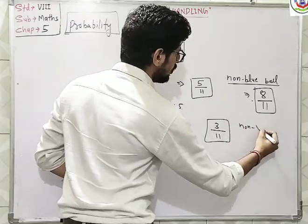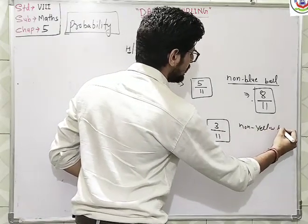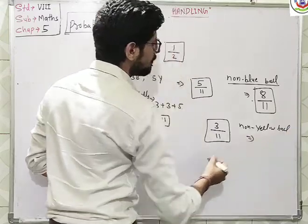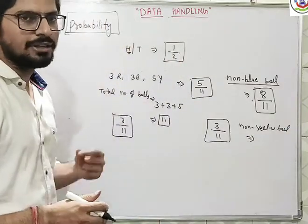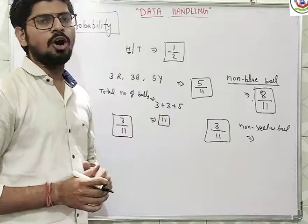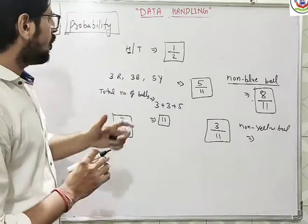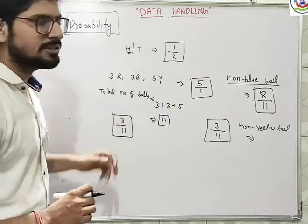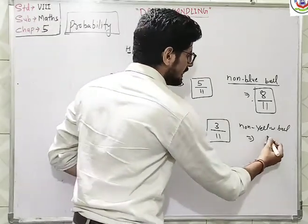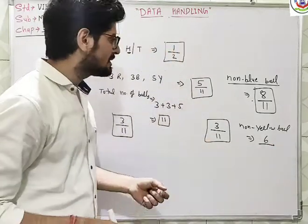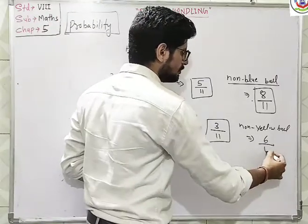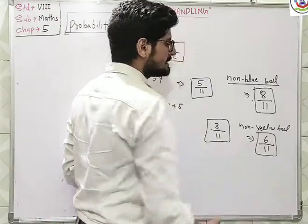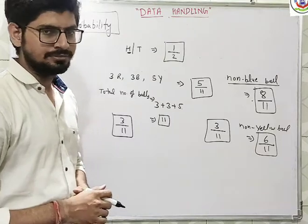Let me tell you about non-yellow ball. What is the probability of getting non-yellow? Non-yellow balls we have are 3 plus 3, that is 6. So you get the numerator is 6 and in the denominator we have total number of balls, that is 6 by 11. Is it clear?